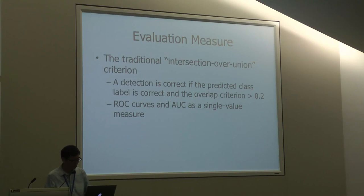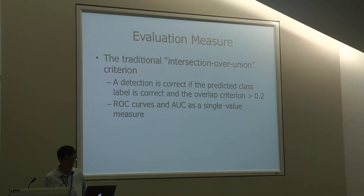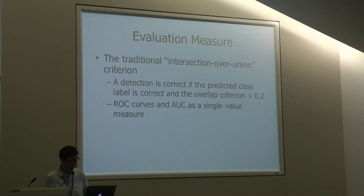For the evaluation measure, we decided to use the traditional intersection over union criteria, which means a detection is correct if, firstly, the action label is correct, and then the overlap criterion is larger than 0.2, following some previous papers. We can then plot precision-recall curves for detection and use AUC — area under the curve — as a single value measure.